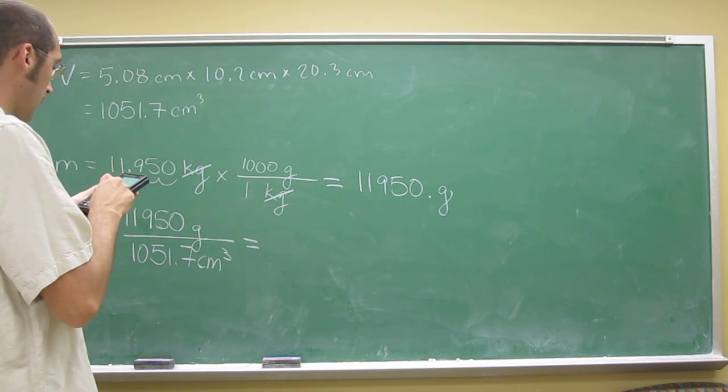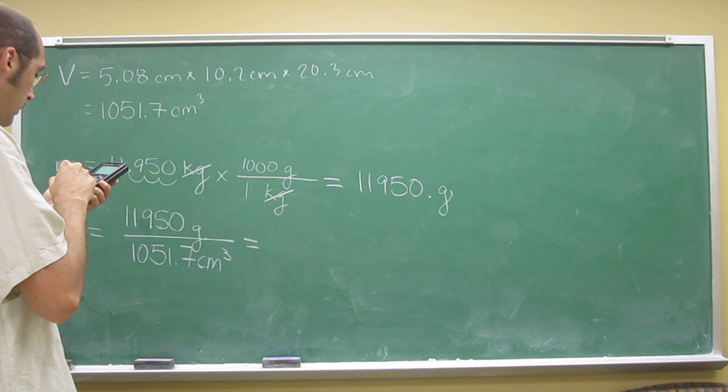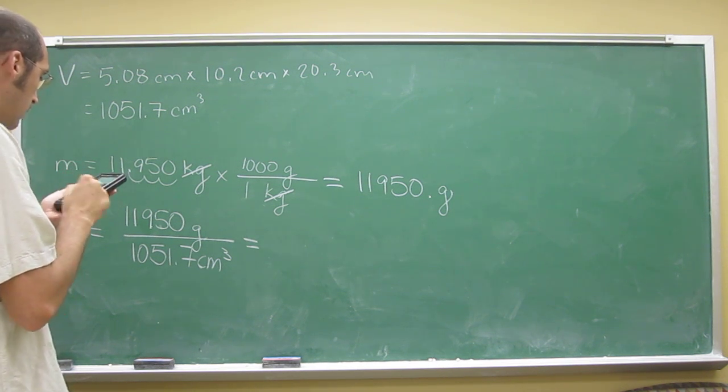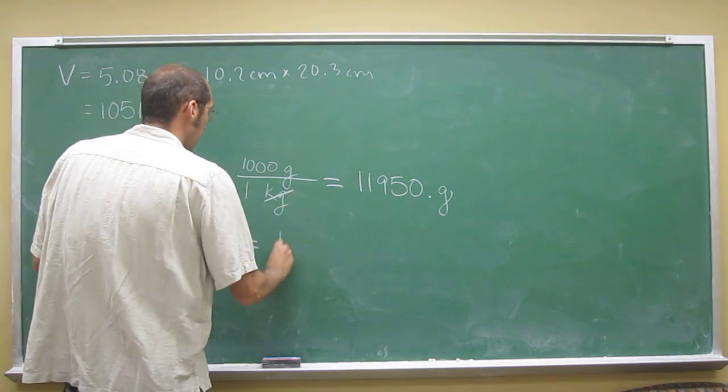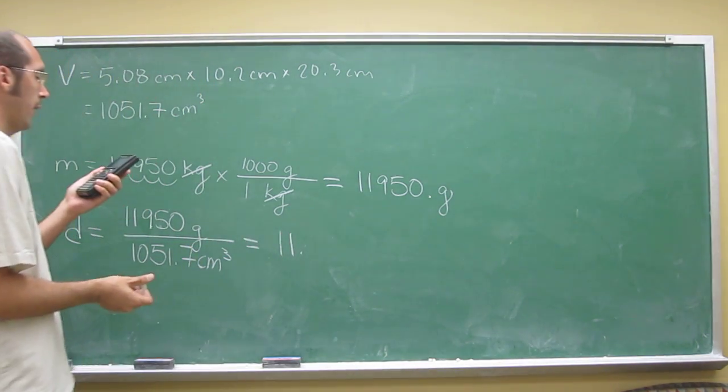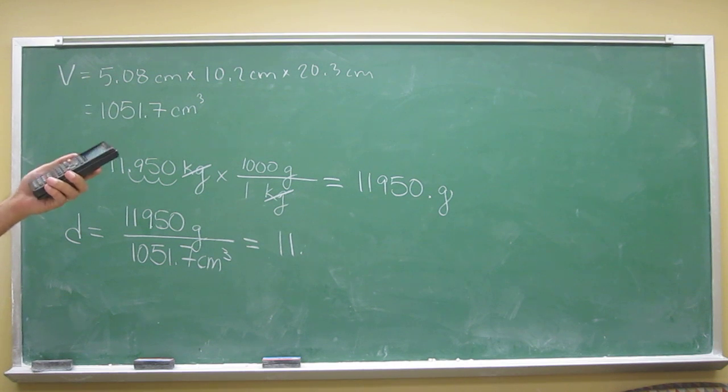So we just take that number, divide it, and we get 11. So it says on my calculator 11.3607756, blah blah blah blah blah.